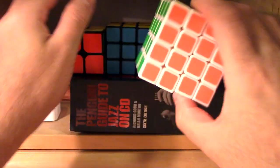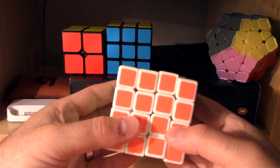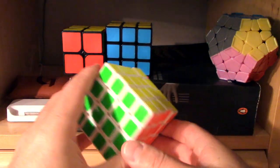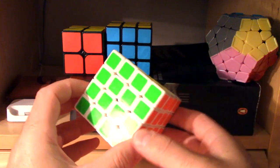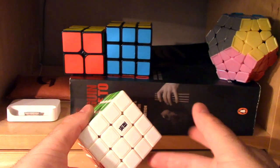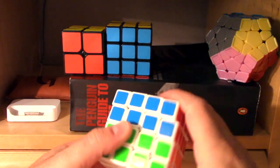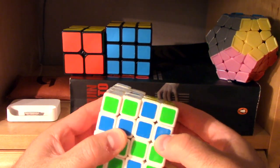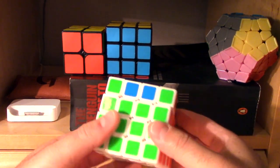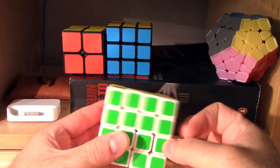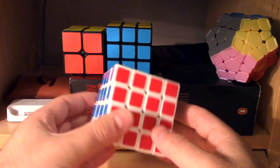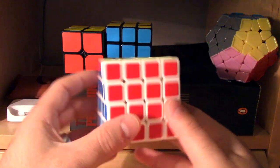This is a 4x4 Moyu Weisu. I haven't re-stickered it yet. Once I got the Aosu, however you pronounce it, and realized how much better that is, I didn't really use this anymore. This is a very good cube though, certainly better than the Shang Shaos that I used to use. I just don't solve 4x4 that much anymore or at least haven't recently. I want to get back into 4x4.